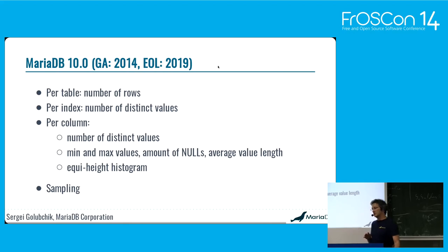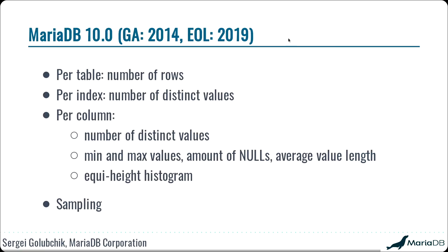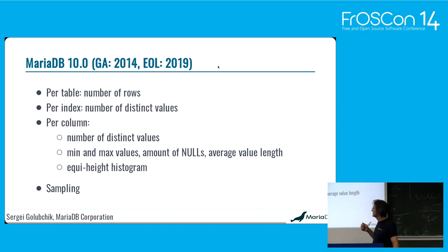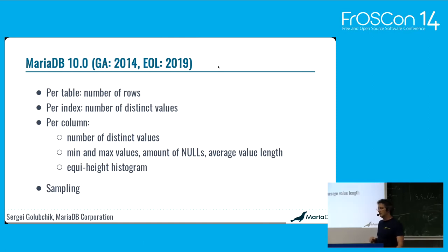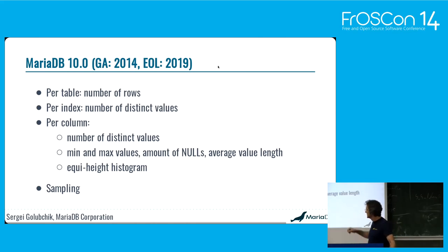Everything I've talked about up to now is not a new feature — it's significantly old and very time-proven. It was first introduced in 2014 in MariaDB 10.0, which is now out of support. The oldest MariaDB version that still has it is MariaDB 10.1. In MariaDB 10.0, this engine-independent statistics collected: number of rows per table, number of distinct values per index, and for every column — indexed or not — it collects number of distinct values, minimum and maximum values, amount of nulls, histograms, and sampling.